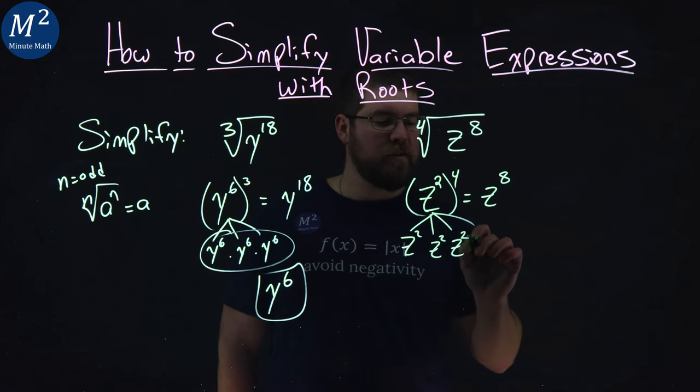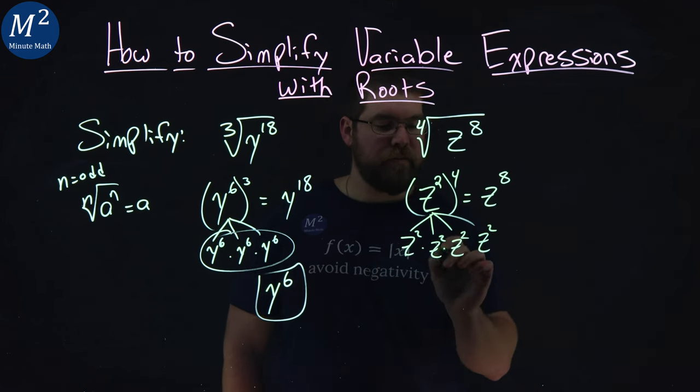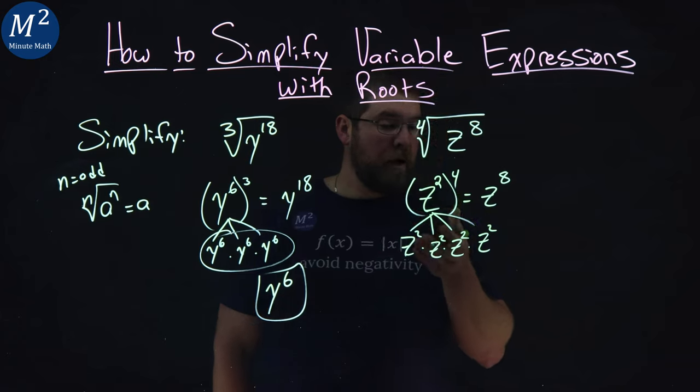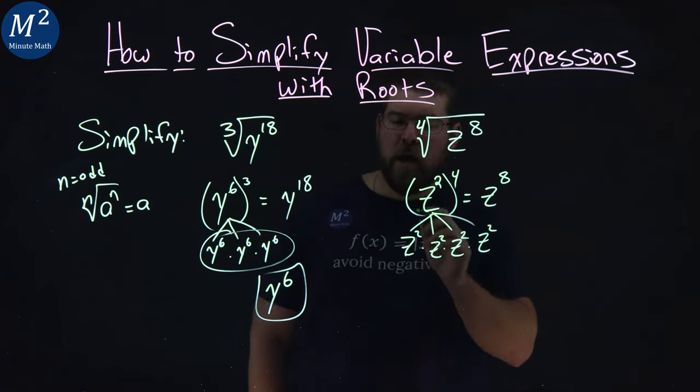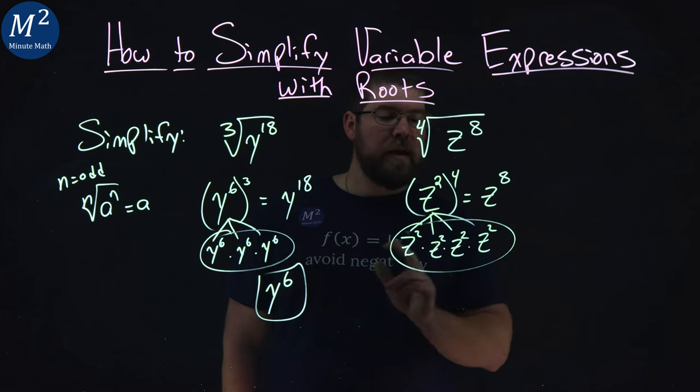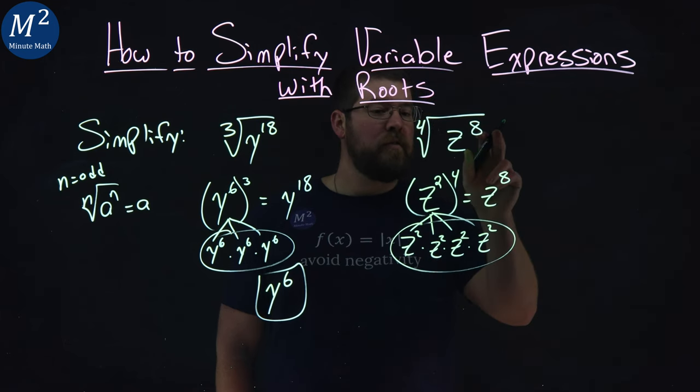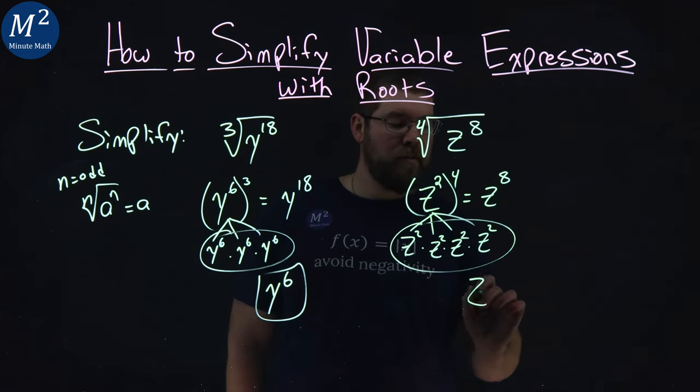Man, my z's look like twos. Good thing I have a little dash through it. We have four pairs of z squared. That could be a good band name. Four pairs of z squared. And we circle them. We can see that there. And so the fourth root of z to the eighth just ends up being z squared.